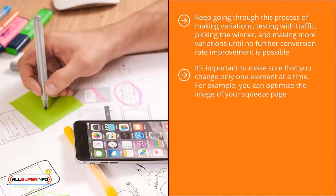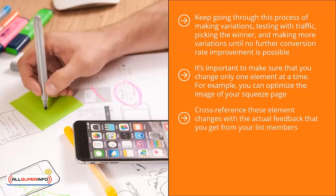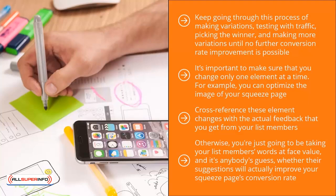At that point, make variations of another element on your squeeze page. It's important to change only one element at a time. For example, optimize the image first; once your squeeze page converts at a higher rate and can't improve any further, then start changing the text and see if that has a positive effect. Move from one element at a time until the squeeze page converts at a fairly high and predictable rate. Cross-reference element changes with the actual feedback you get from your list members — using these two pieces of data you should be able to come up with a statistics-driven modification strategy.